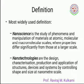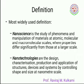The most widely used definition of nanoscience is the study of phenomena and manipulation of materials at atomic, molecular, and macromolecular scales, where properties differ significantly from those at a larger scale. Nanotechnology is the design, characterization, production, and application of structures, devices, and systems by controlling shape and size at the nanometer scale.